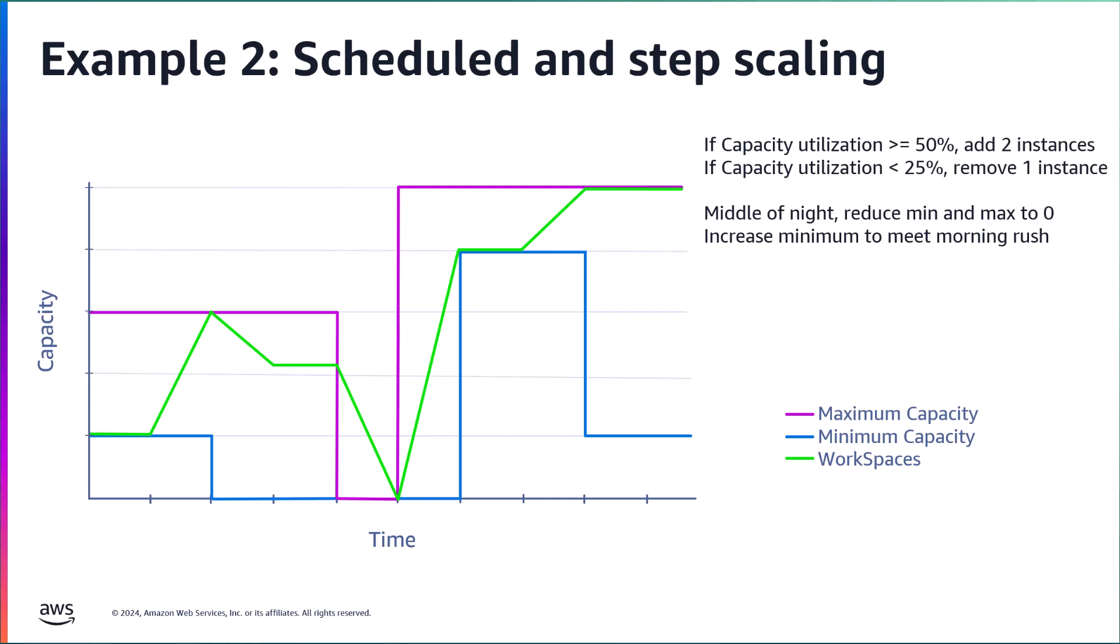As you can see in the example timeline, the number of workspaces in the pool, again represented by the green line, grows and shrinks within the bounds of the minimum and maximum capacity values represented in purple and blue. Notice that at one point in time, the minimum and maximum capacity values are dropped to zero, which drops the number of workspaces in the pool to zero overnight. And then the minimum is set to a high number to ensure enough workspaces are brought online prior to the morning logon rush, before finally being allowed to scale back in as users begin to log off for the day.